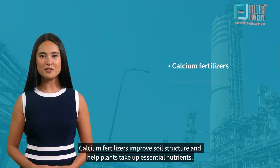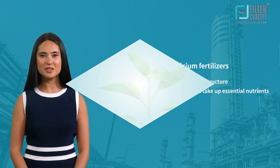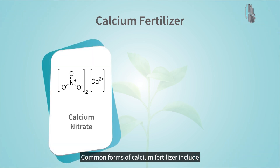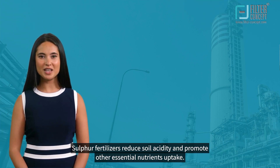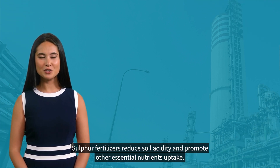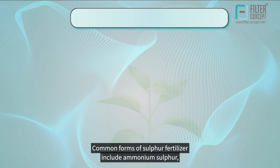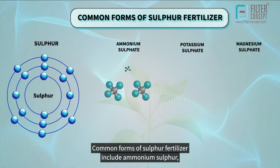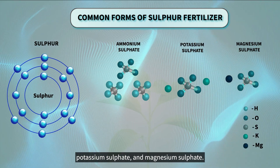Calcium fertilizers improve soil structure and help plants take up essential nutrients. Common forms of calcium fertilizer include calcium nitrate and calcium sulfate. Sulfur fertilizers reduce soil acidity and promote other essential nutrients uptake. Common forms of sulfur fertilizer include ammonium sulfate, potassium sulfate, and magnesium sulfate.